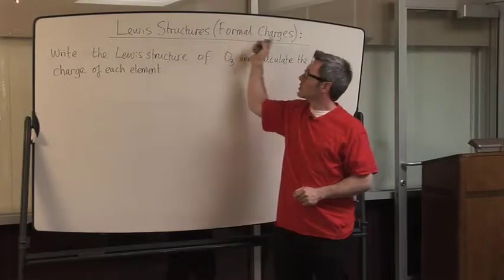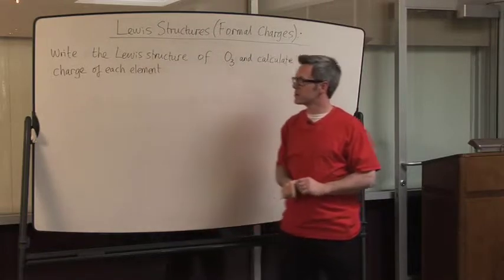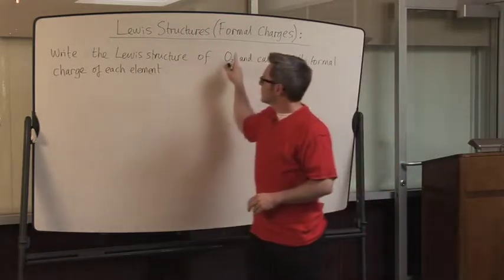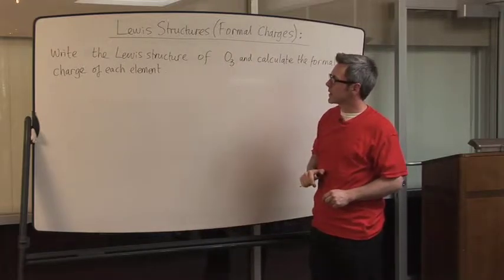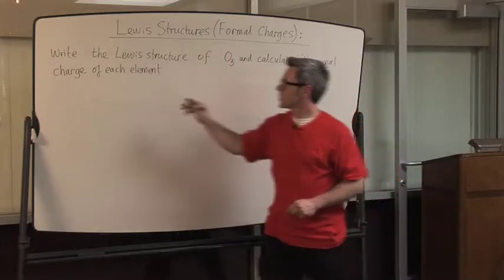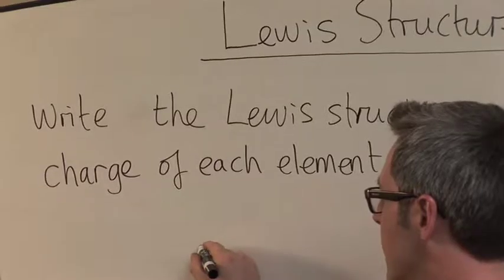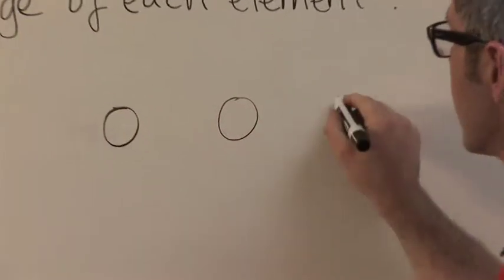We're going to calculate the formal charges of each element in ozone by first drawing the Lewis structures. The first thing you do is identify the chemical you're given. We see here there's three oxygen atoms. So the first thing we do is draw three oxygens with a separation in between them.